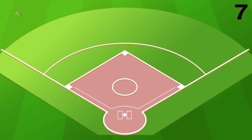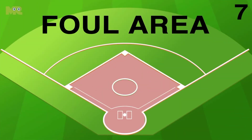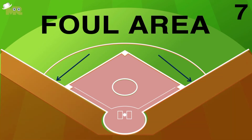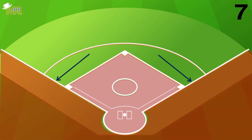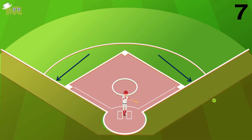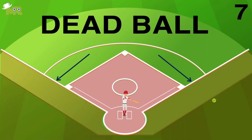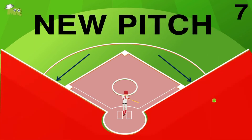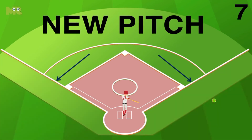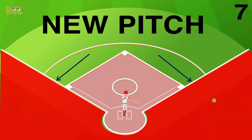Rule 7: The foul area is located down the 1st and the 3rd base line. Once the ball crosses this line before it bounces, the ball is deemed dead and the players start with a new pitch.